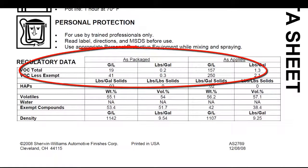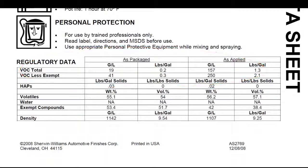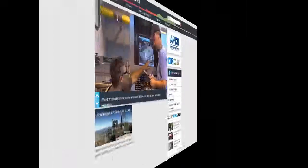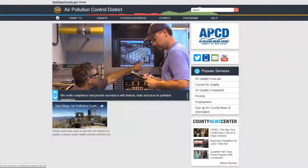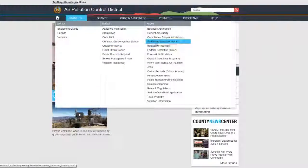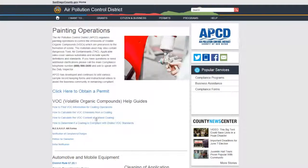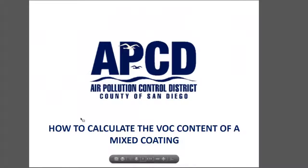If this value is not found in a manufacturer-supplied document, you can calculate it using the VOC information from each component. For help with calculating the VOC of mixture, review 'How to Calculate the VOC Content of a Mixed Coating' posted on the district website.